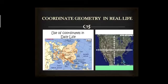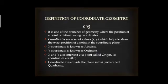Coordinate geometry is used in maps to find out the exact location of a place, as well as in mobile phones, computers, navigation purposes, and airplanes. It is defined as a system used to find out the position of a point using coordinates. Coordinates are a set of values, x and y, which help to show the exact position of a point in the coordinate plane.